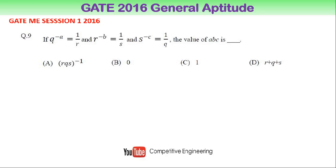So now we are going to solve this question. We know that Q^(-A) = 1/R which is given in the question. So we can write 1/Q^A = 1/R, or Q^A = R.